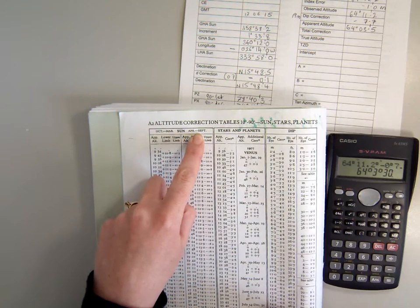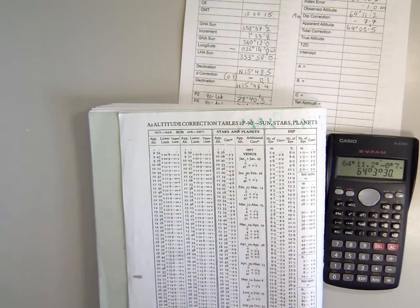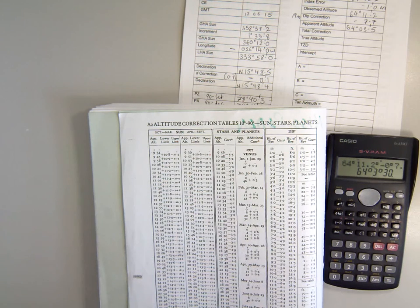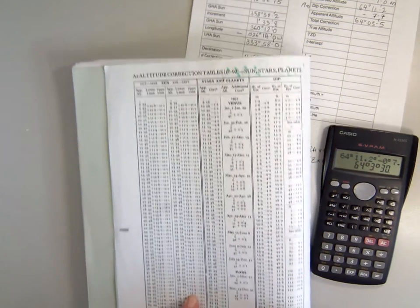And at 64 degrees 3.5 we're going to be between 61.51 and 67.17, which means our total correction is plus 15.5.